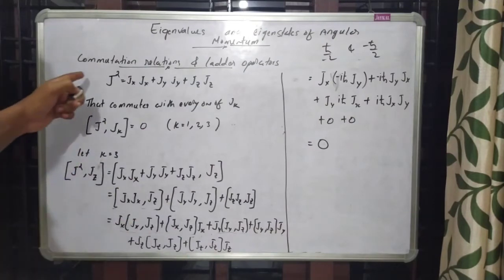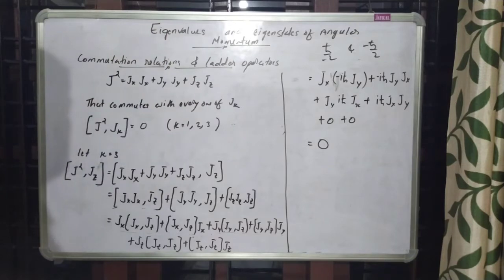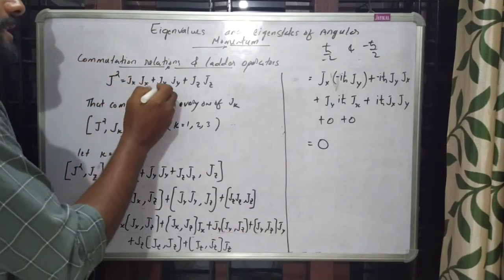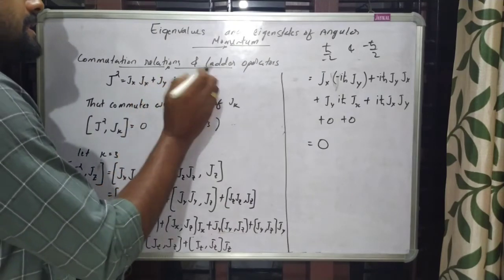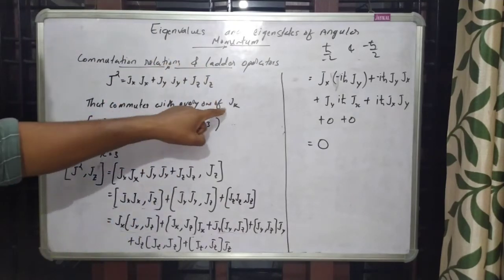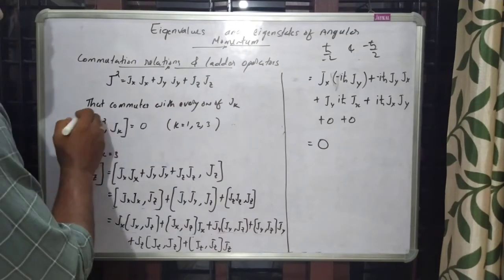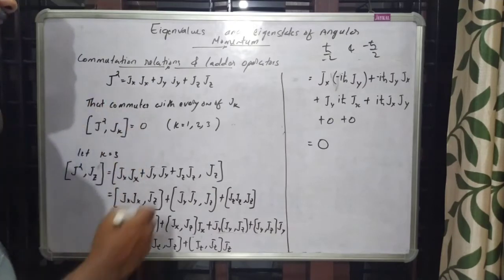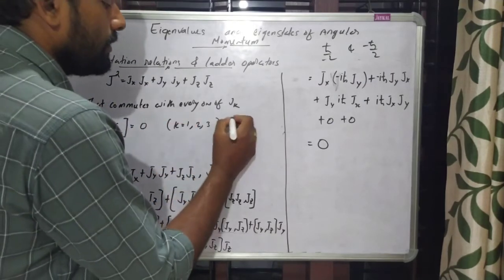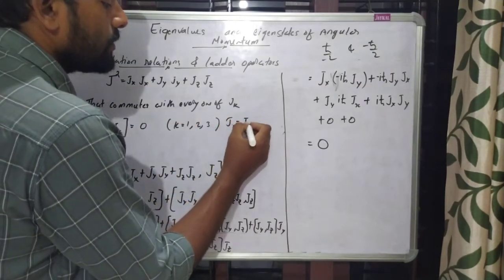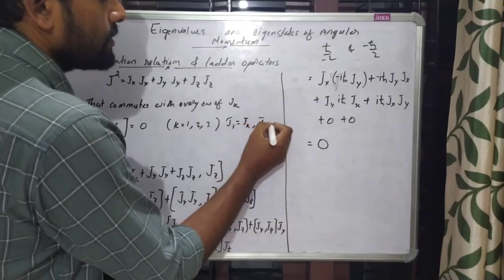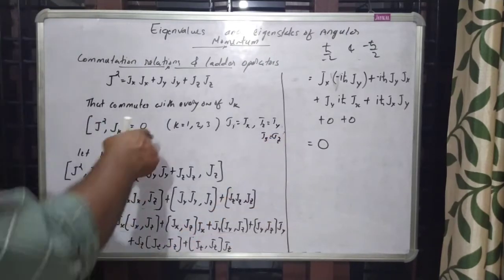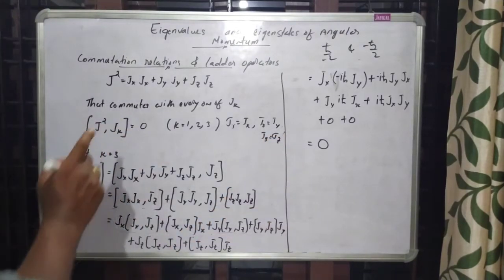To generalize the angular momentum states, let's begin with commutation relations and ladder operators. We define an operator J² equal to JxJx plus JyJy plus JzJz, and this commutes with every one of Jk. The property is [J², Jk] = 0 where k = 1, 2, 3, and J1 = Jx, J2 = Jy, J3 = Jz. To prove this, let's take the example k = 3, that is Jz.